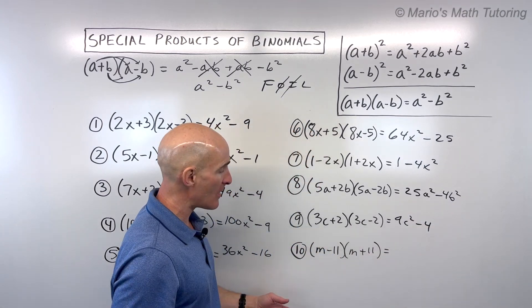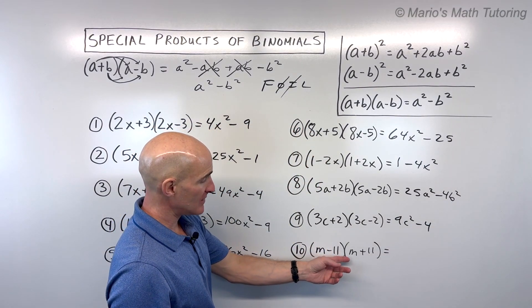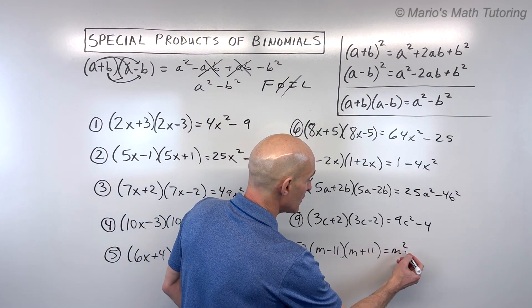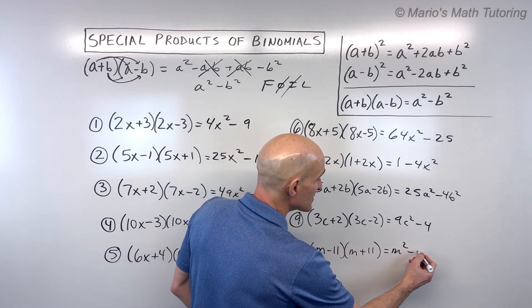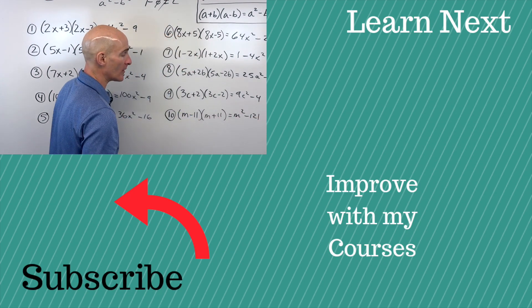For the last problem: m times m is m squared, and negative 11 times positive 11 is negative 121.